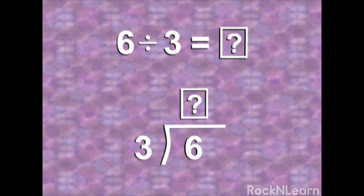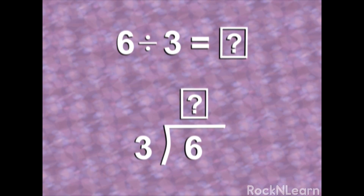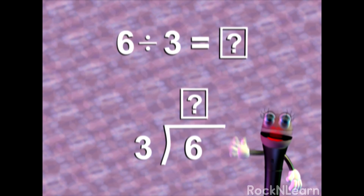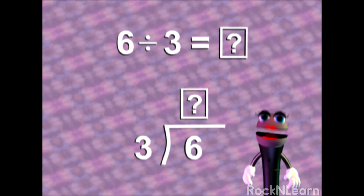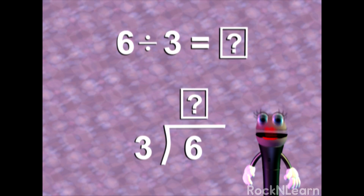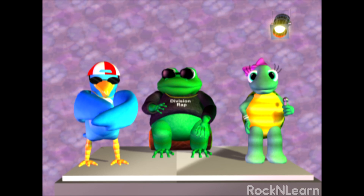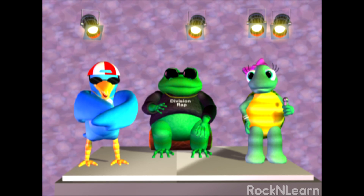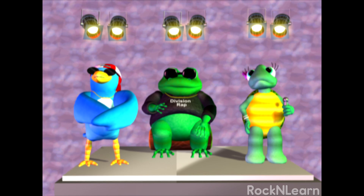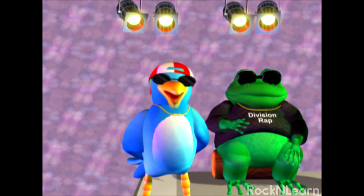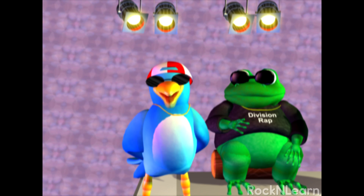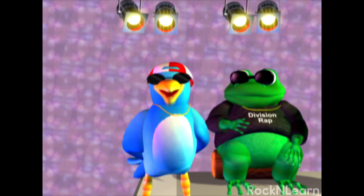Six spotlights divided among three people equals how many spotlights for each person? You can see that a division problem can be written at least two different ways. Both mean six divided by three. Normally you don't see the box with a question mark on division problems, but we use it in some of our examples to show where the answer goes. Nelson could say: one for Michelle, one for Rappin' Sebastian, and one for me — until they were gone. Nelson would find that each performer got two spotlights. But I know my division facts, and I'm good at dividing in my head, so it takes me only a second to realize that six divided by three equals two.